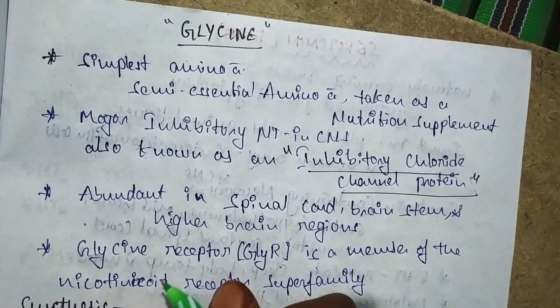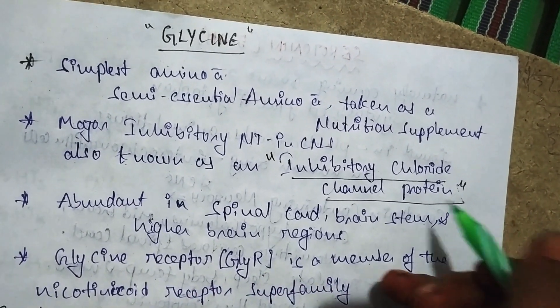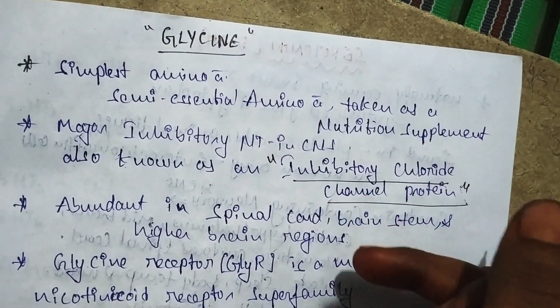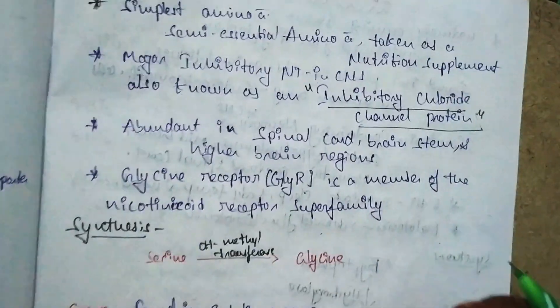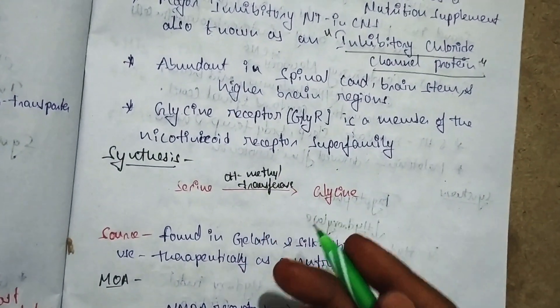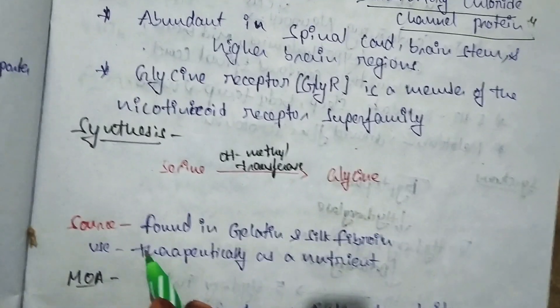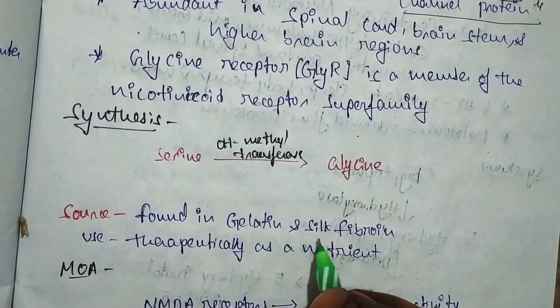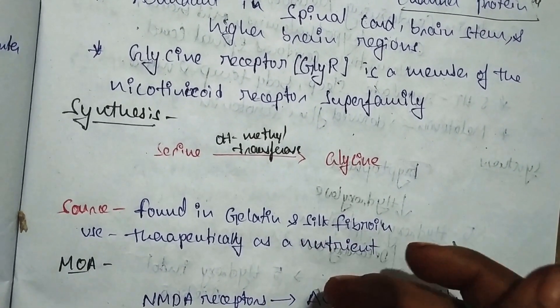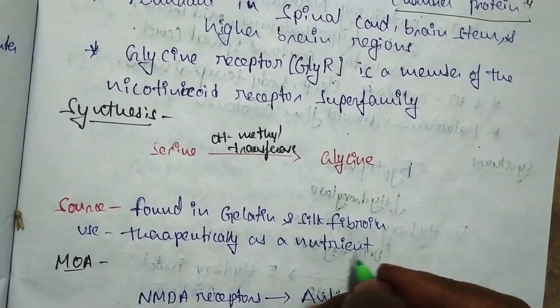Glycinergic receptors are members of the nicotinoid receptor superfamily. The GABA receptor is also known as a glycinergic receptor. Glycine is synthesized from serine in the presence of hydroxy-methyl transferase enzyme. The source is found in gelatin and silk fibrin as a nutrition supplement. Therapeutically, it is a nutrient.